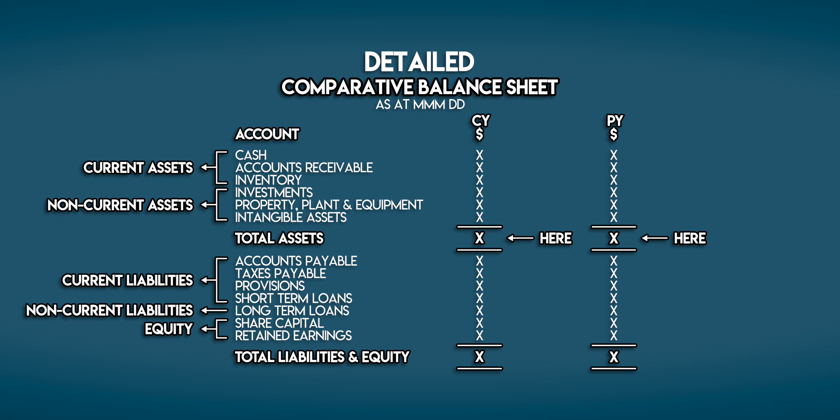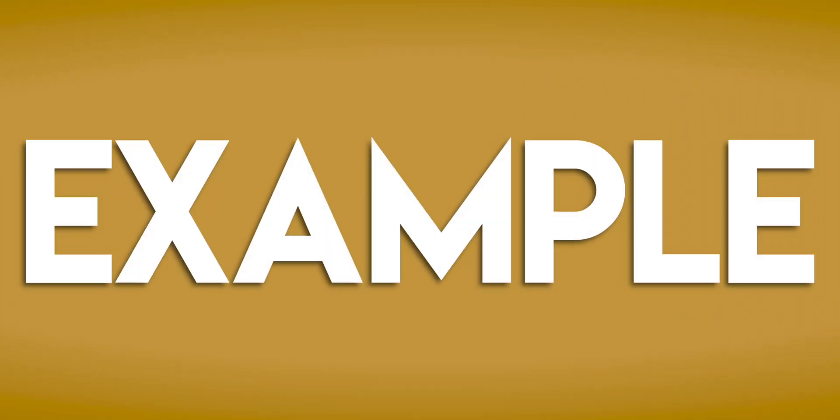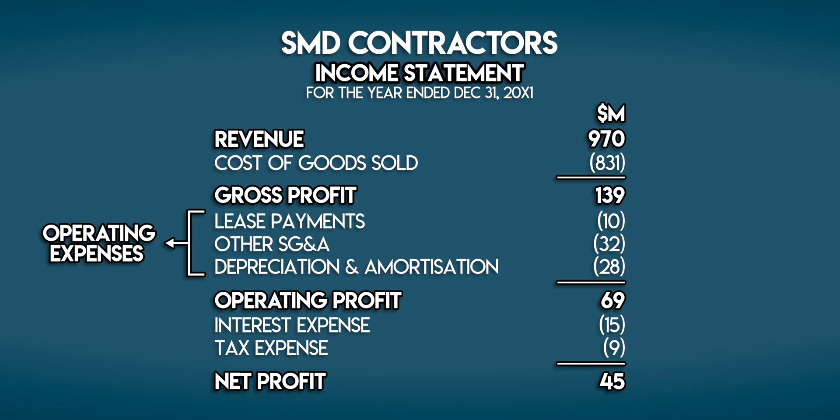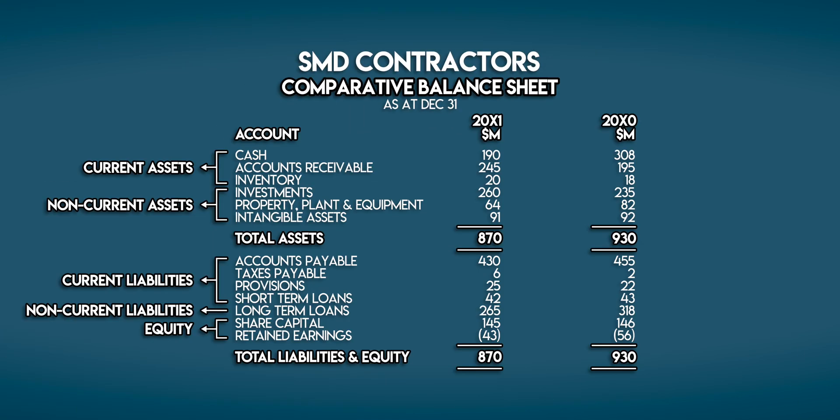Drumroll please — how do you calculate return on assets? It's time for an example. Scoop, Muck and Dizzy Contractors is a company that designs and builds infrastructure all across the Sunflower Valley. Here are their financial statements: their income statement for the current year and their comparative balance sheet, which we can use to work out SMD Contractors' return on assets.